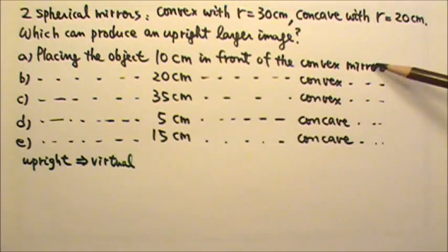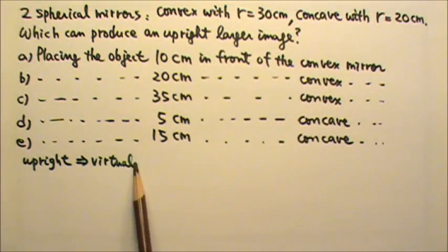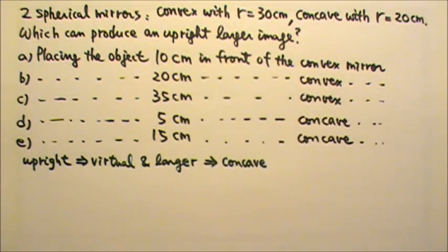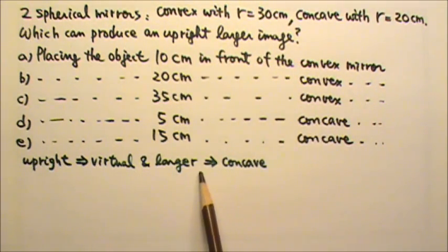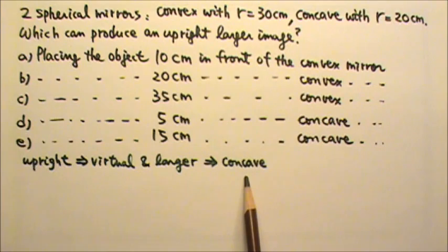An upright image produced by a single mirror must be a virtual image. A virtual image that is larger than the object can only be produced by a concave mirror. This is when we use a concave mirror as a makeup mirror. We would hold the mirror really close to see the bigger upright image.